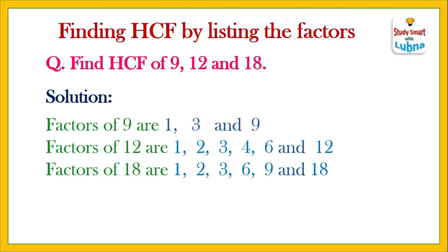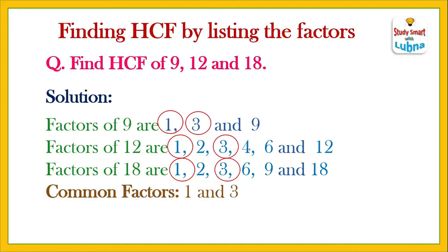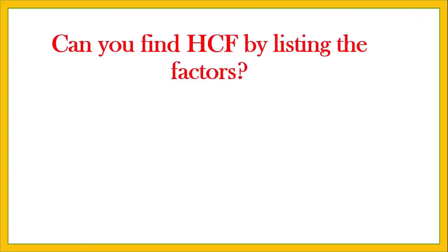The common factors of 9, 12, and 18 are 1 and 3. The highest common factor is 3. So the HCF of 9, 12, and 18 is 3. Can you find HCF by listing the factors?